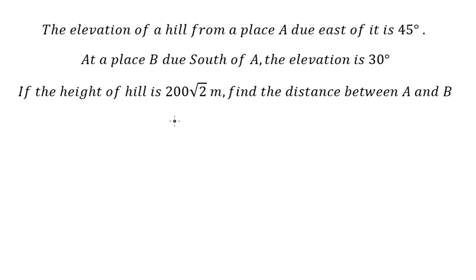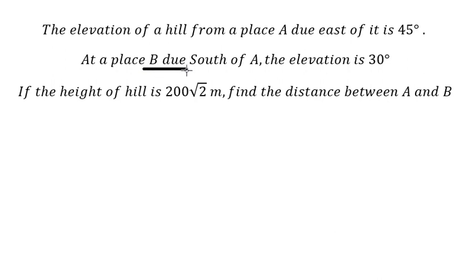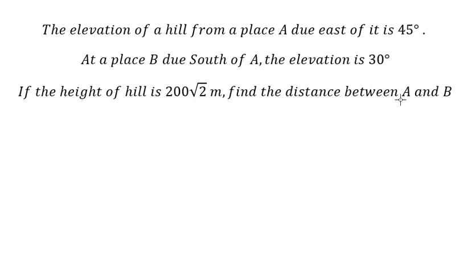Hey guys, welcome back to my channel. Today I want to talk about the angle of elevation. We have the elevation of a hill from location A due east, that is about 45 degrees, and B due south of A, that is about 30 degrees. We know the height of the hill and we need to find the distance between A and B. Now I will show you how to answer.